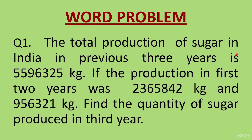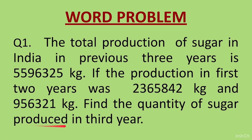Question 1. The total production of sugar in India in the previous 3 years is 5596325 kg. If the production in the first 2 years was 2365842 kg and 956321 kg, find the quantity of sugar produced in the 3rd year. For this, first you will add the first year's production and the second year's production. Whatever answer you get, subtract it from the total production of sugar — that will give you the quantity of sugar produced in the 3rd year.